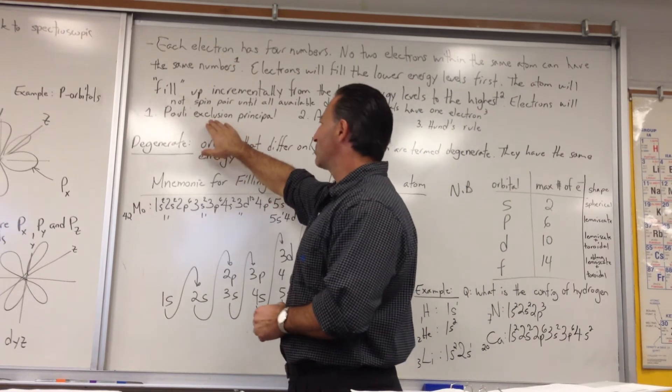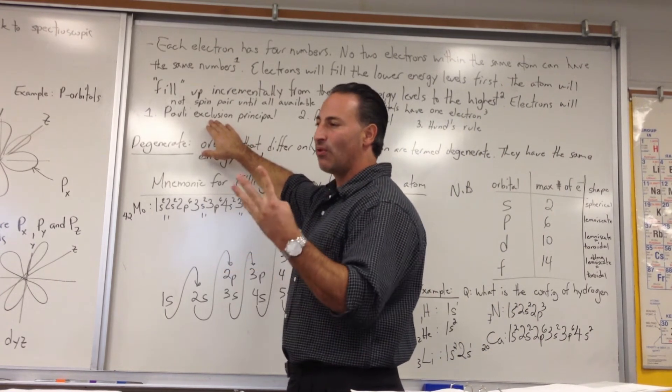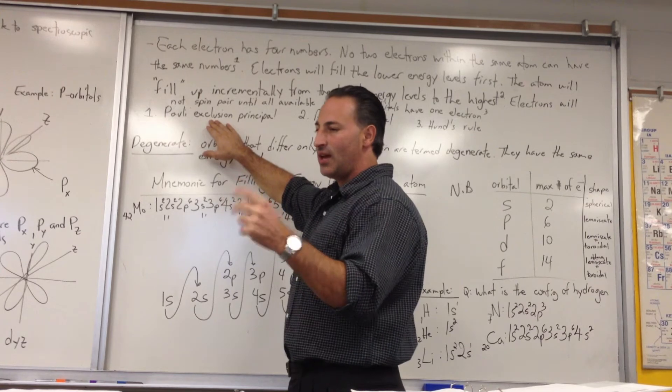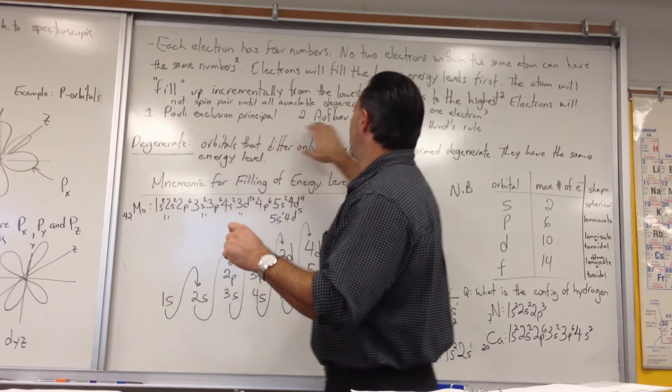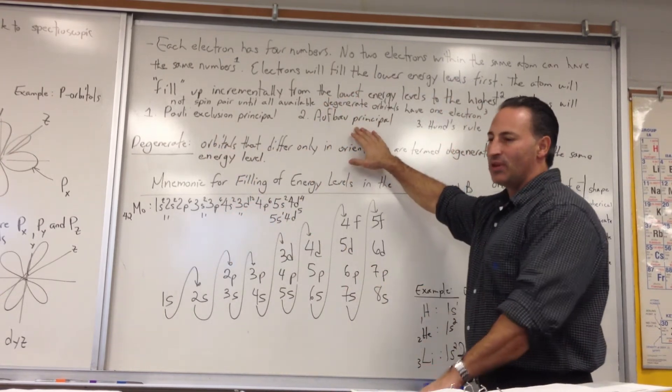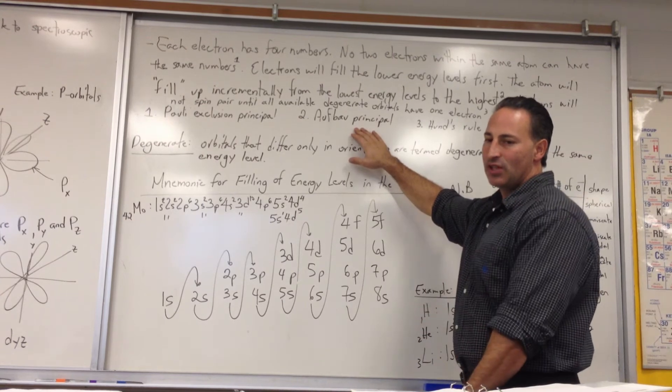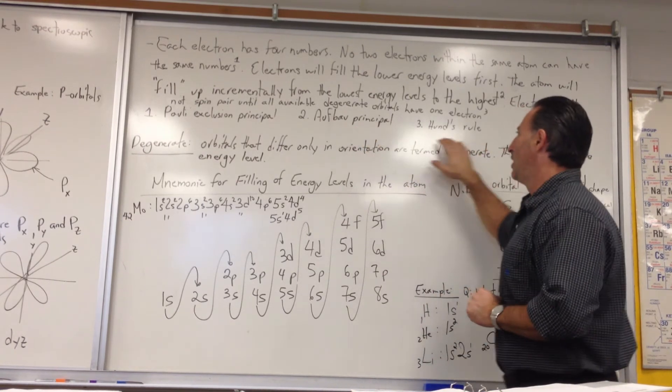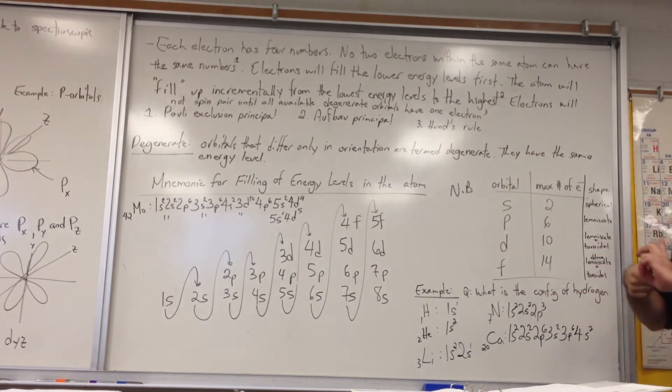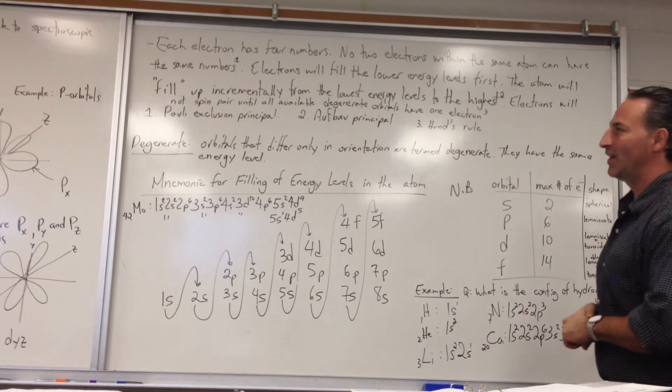We'll recap. Pauli Exclusion Principle: all the electrons have four different numbers within any given atom. Aufbau Principle: the atom fills from the bottom up. Lowest energy levels first, higher energy levels later. Hund's Rule: electrons don't spin pair until they have to.